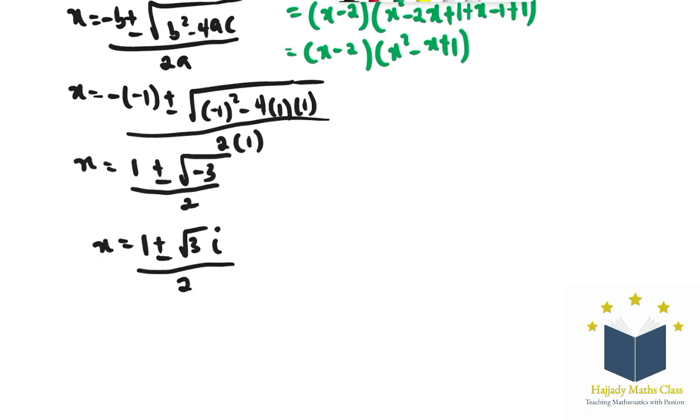So finally my x is going to be 1 plus root 3i over 2, or my x is going to be 1 minus root 3i over 2, and lastly my x is 2, which is the first value we got.